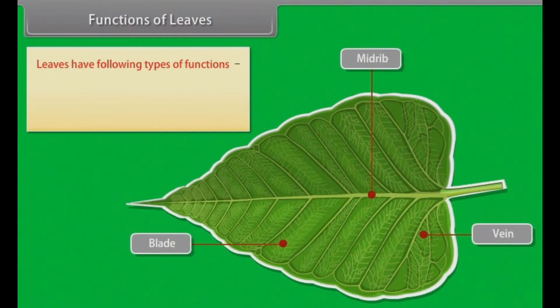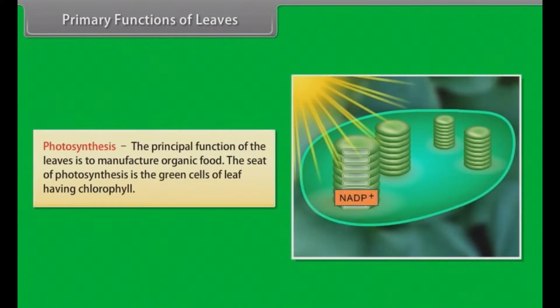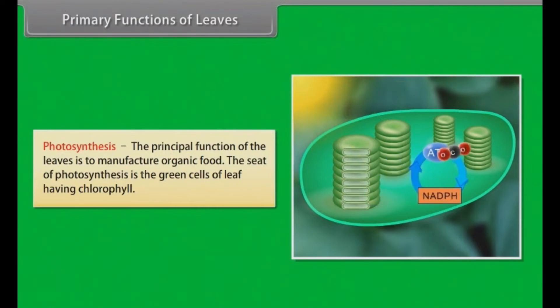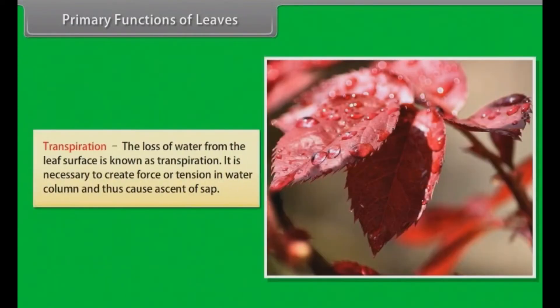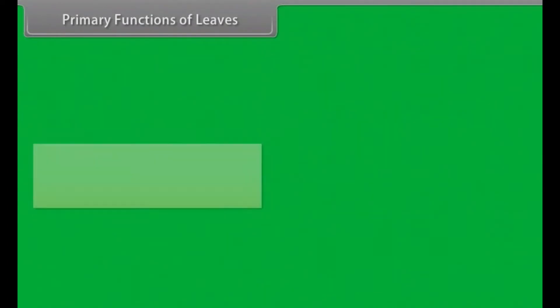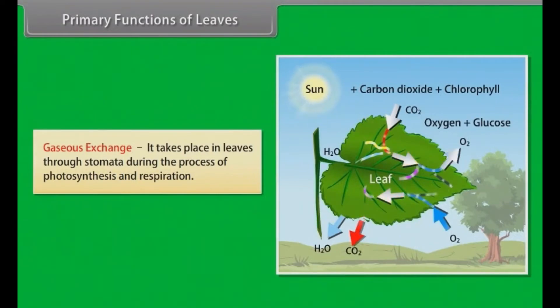Functions of leaves. Leaves have primary (main) functions and secondary (accessory) functions. Primary functions: Photosynthesis — the principal function of the leaves is to manufacture organic food; the seat of photosynthesis is the green cells of leaves having chlorophyll. Transpiration — the loss of water from the leaf surface is known as transpiration; it is necessary to create force or tension in the water column and thus cause ascent of sap. Gaseous exchange — it takes place in leaves through stomata during the process of photosynthesis and respiration.